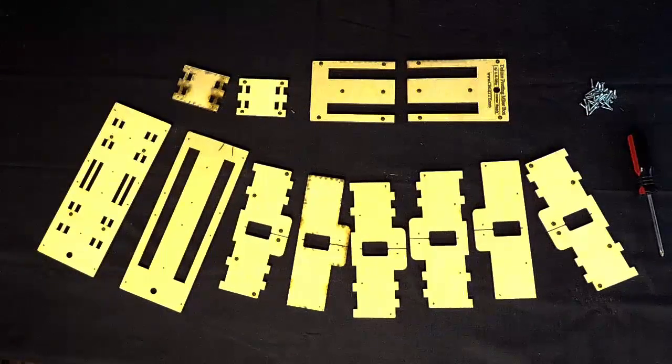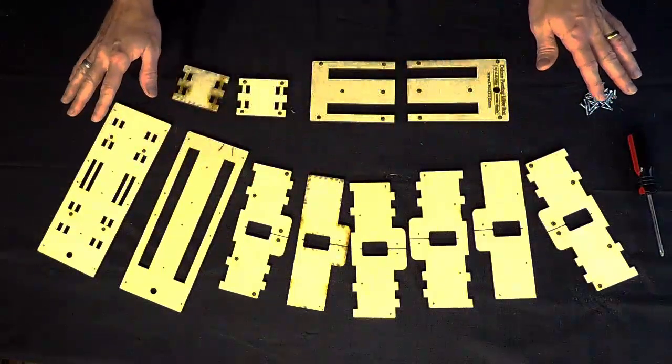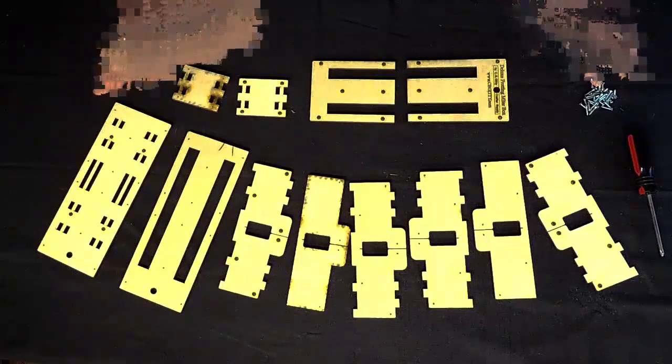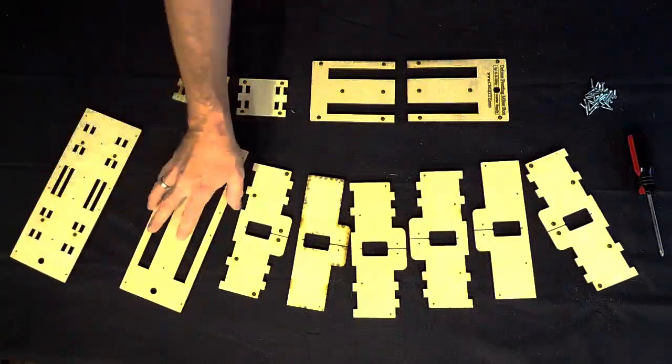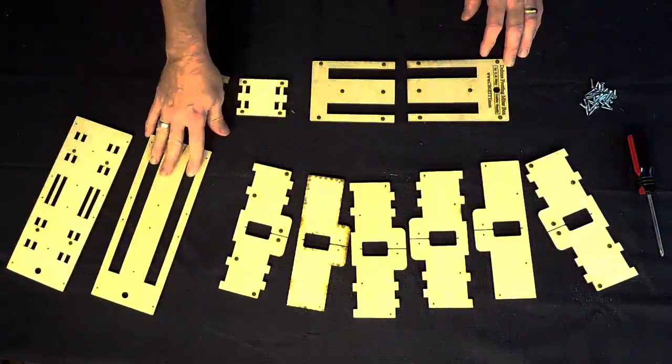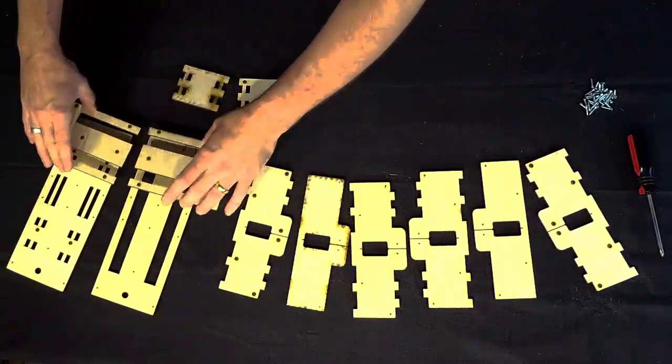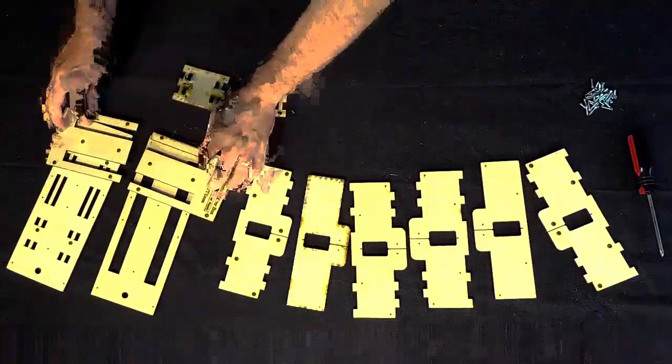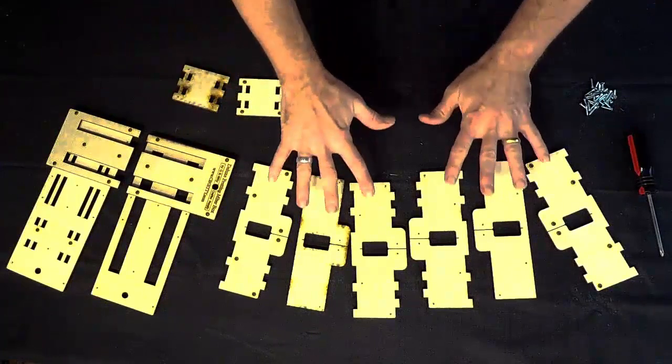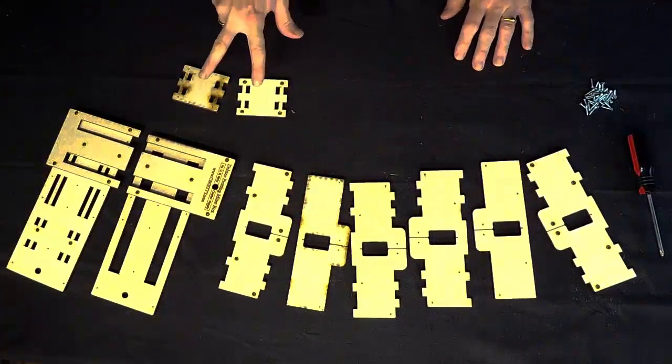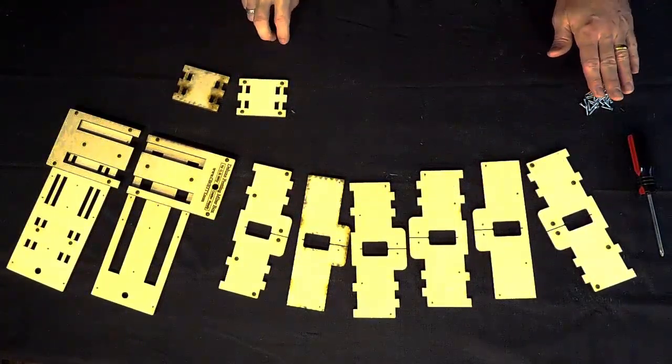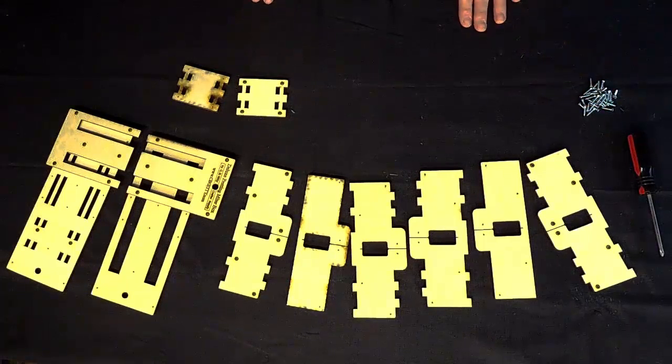Begin by laying out all of the parts of your kit on a stable work surface. You should have two large base pieces with a third set of smaller top base pieces, six side pieces, two top braces, and 36 small flat Phillips head screws.